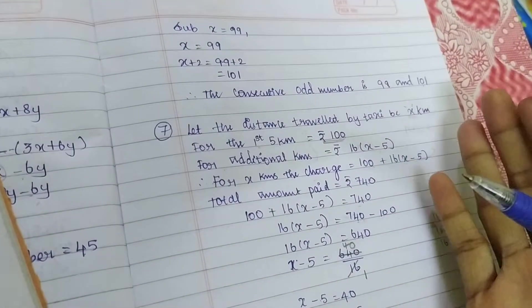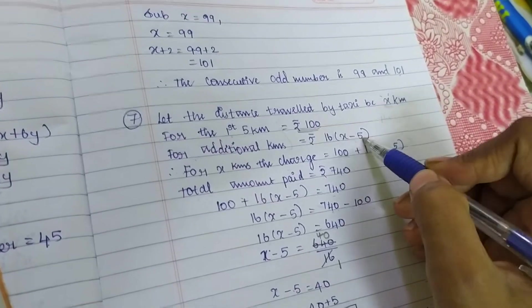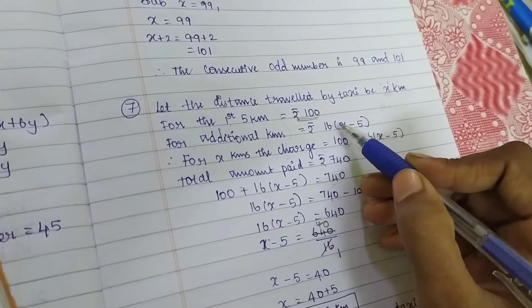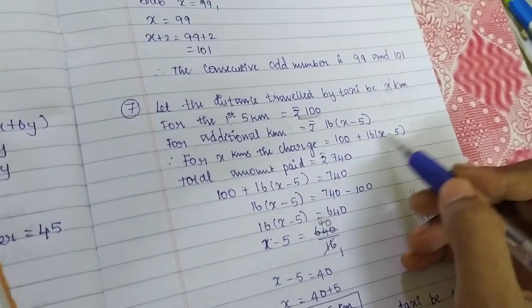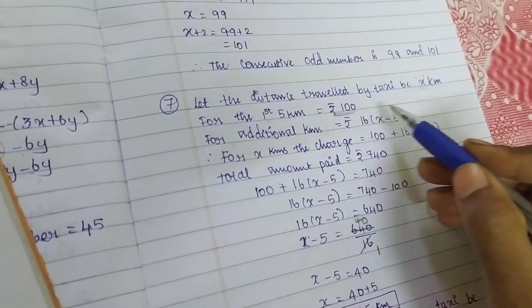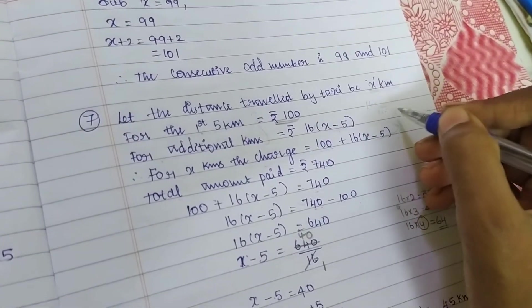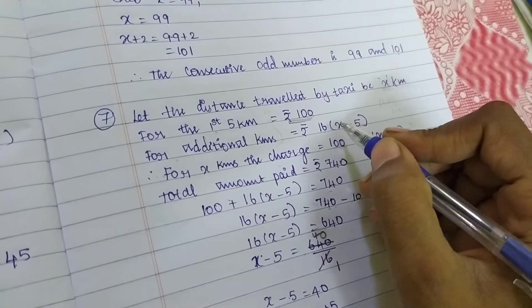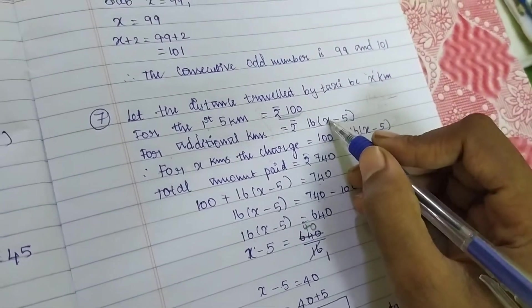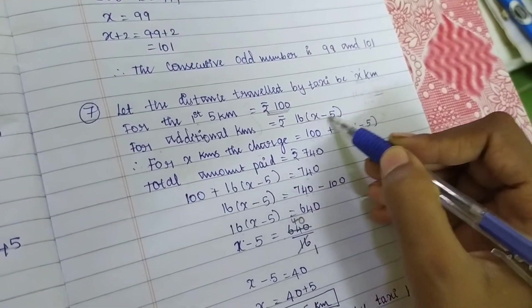For additional kilometer - additional means 6th kilometer onwards. So I am ignoring the first 5 kilometers only. I can find out distance X minus that 5 kilometers. Then I can find out 16, 18 rupees like that. So 16 into X minus 5. Because after that kilometer only, I am going to find out 6th kilometer onwards. So first 5 kilometers I am neglecting. 1 kilometer is 16 means 16 into that kilometer.